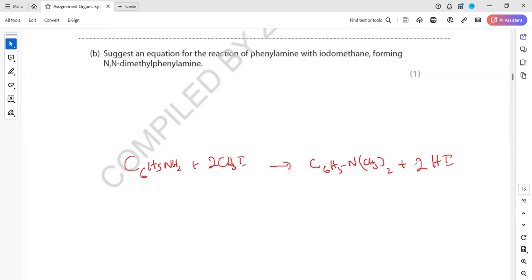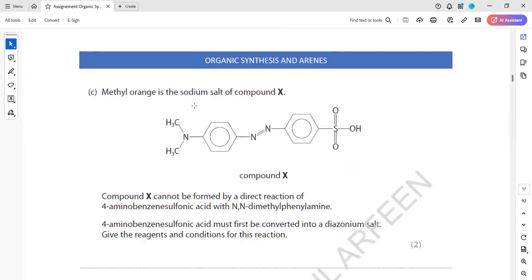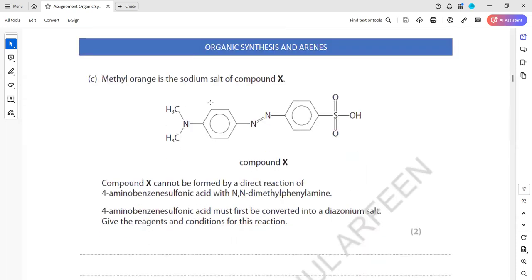So this is not like a mechanism. It's just an equation which shows how this reaction happened. Methyl orange is a sodium salt of compound X. Compound X cannot be formed by direct reaction. As you can see, it's a coupling here. That nitrogen-nitrogen are coupled. So it means a diazonium compound is first formed.